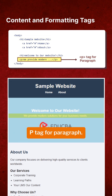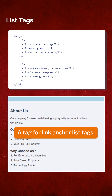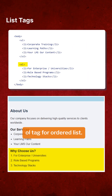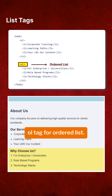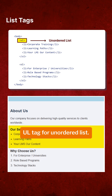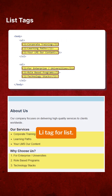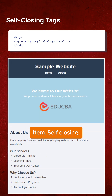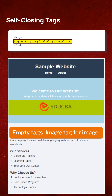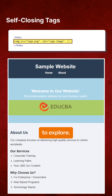Content and formatting tags: h1 to h6 tags are for headings, the p tag is for paragraphs, and the a tag is for links (anchor). List tags: the ol tag is for ordered lists, the ul tag is for unordered lists, and the li tag is for list items. Self-closing empty tags: the image tag is for images. There are tons of other tags to explore — check the link in the description below.